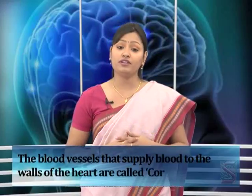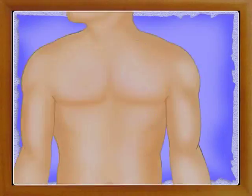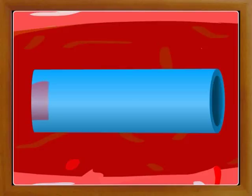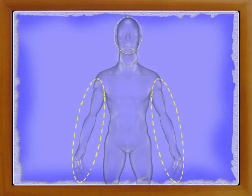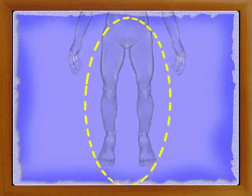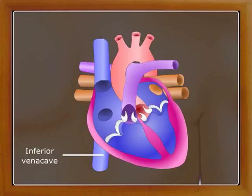The heart also requires oxygen, food, and other substances for its working, so it is also supplied with blood vessels. The blood vessels that supply blood to the walls of the heart are called coronary arteries. The blood vessels that bring blood back to the heart are called veins. The walls of the veins are thin and the flow of blood in the veins is continuous. All the veins in the head, neck and hands unite into a single large vein called the superior venacava. All the veins in the legs and trunk unite into a single large vein called the inferior venacava. The superior and inferior venacava pour blood into the heart.